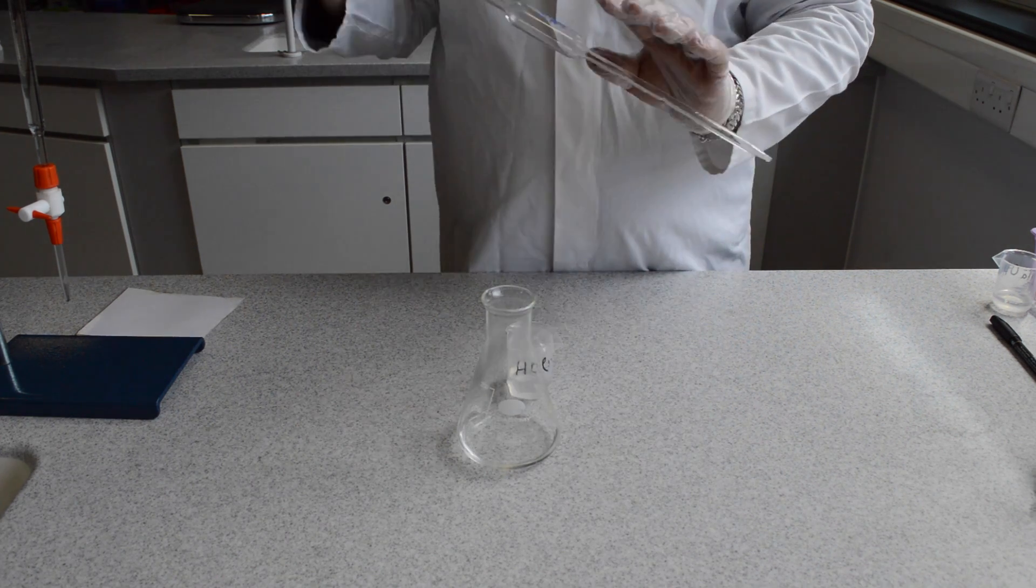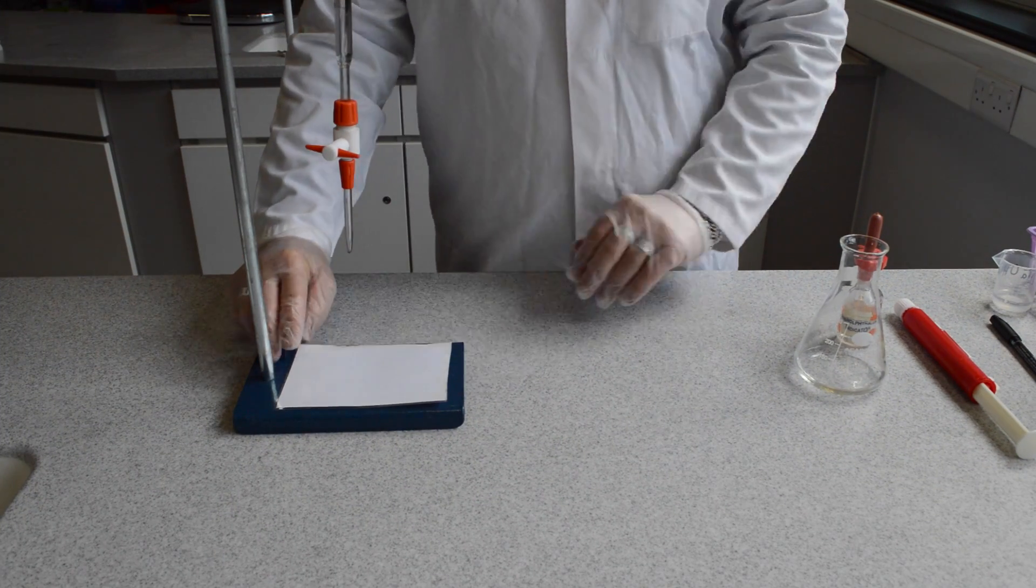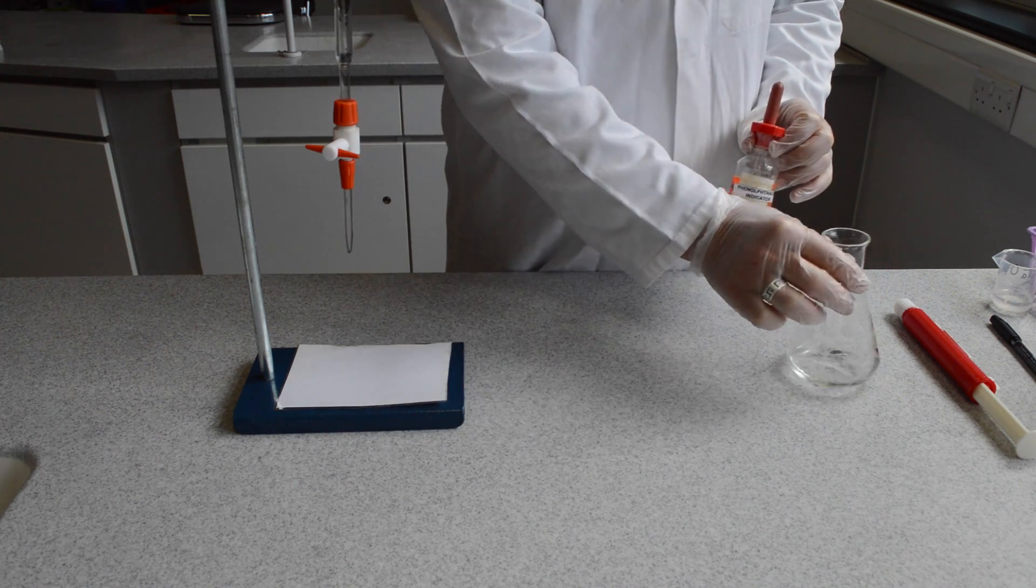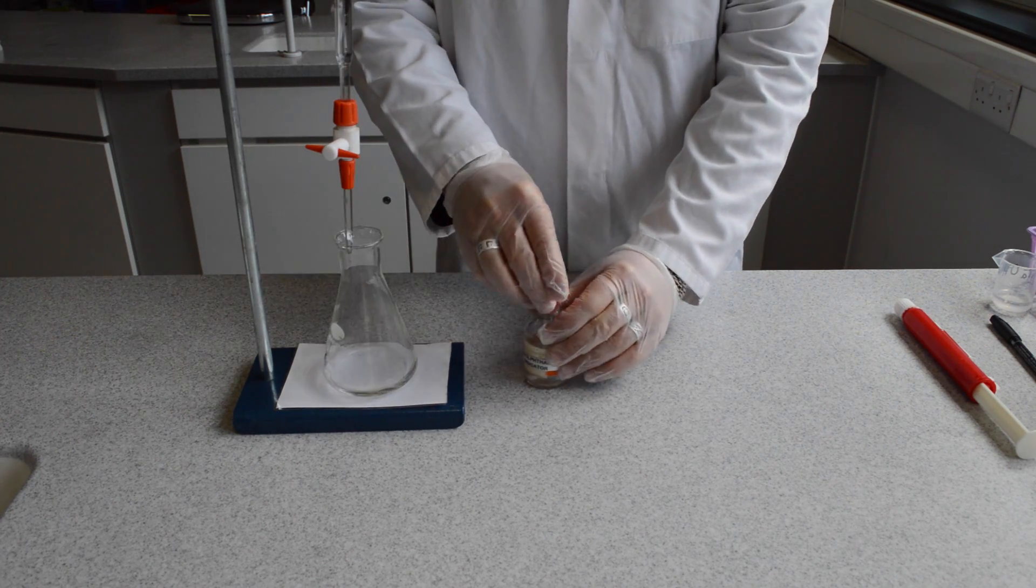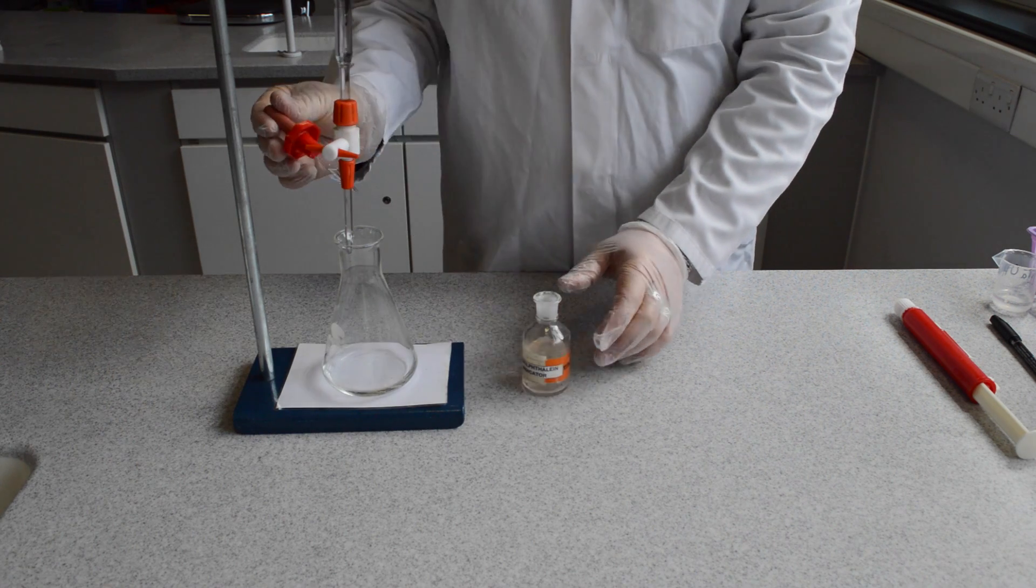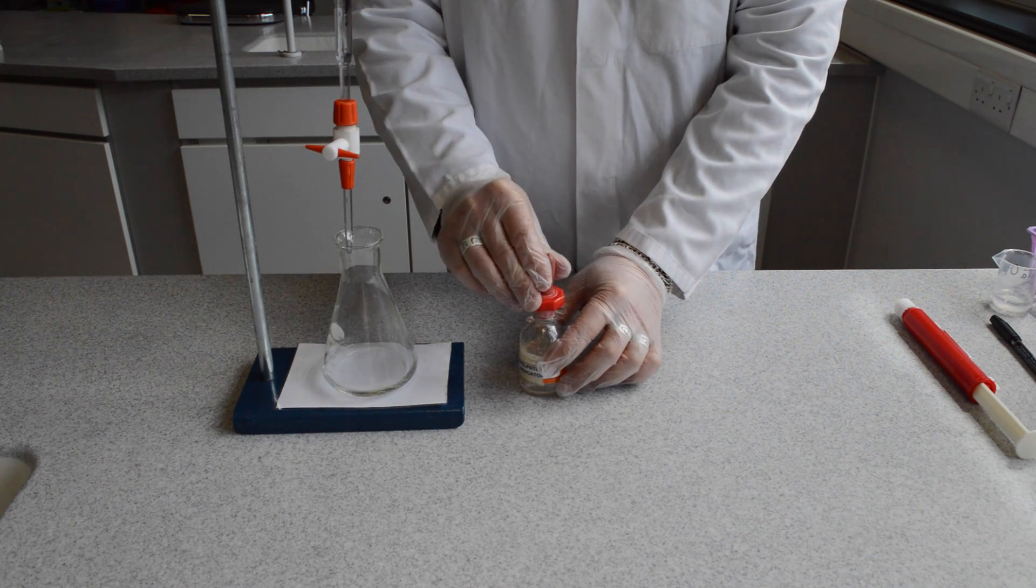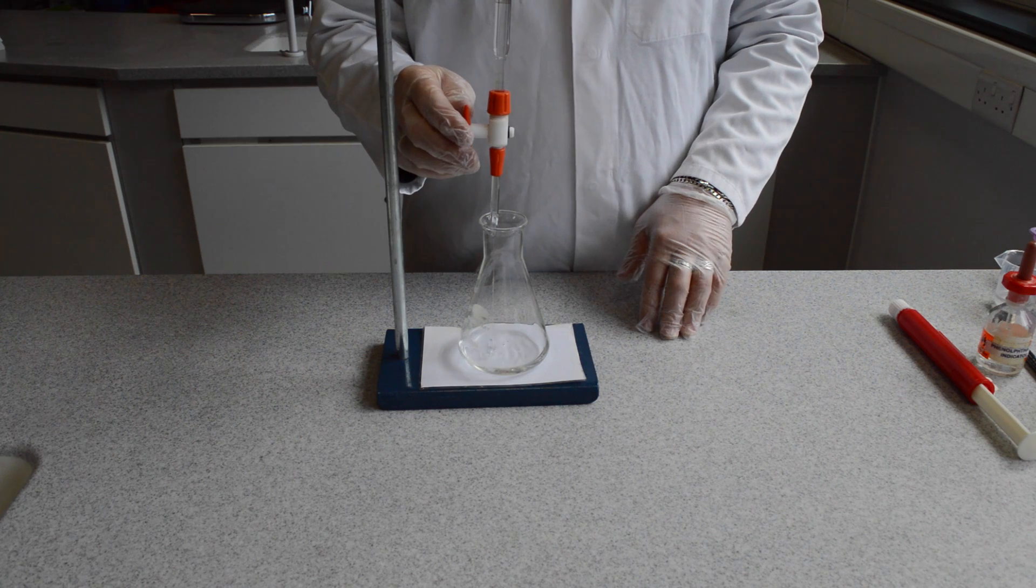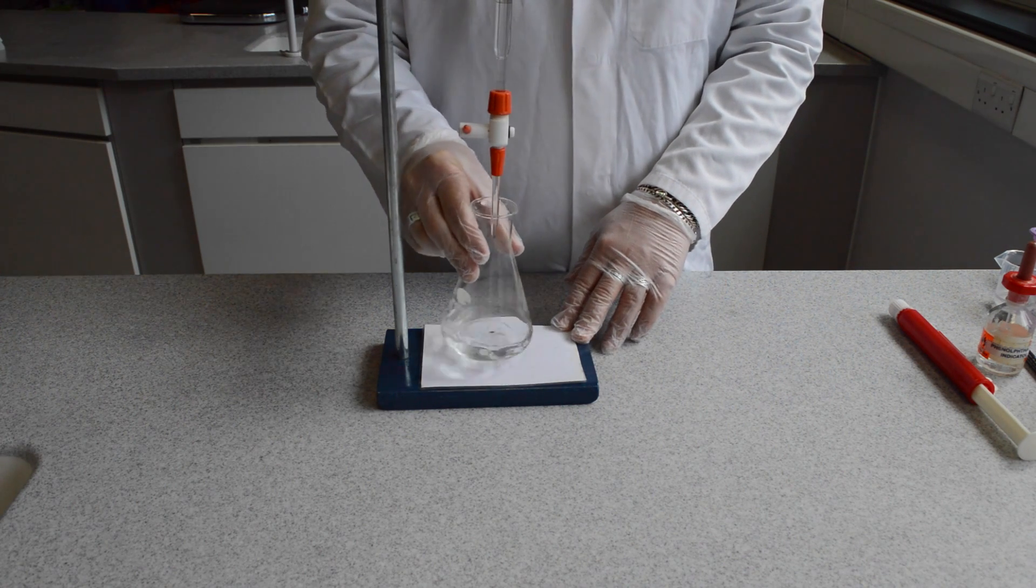When performing the titration, use a white card or white tile on the base of the burette stand. This enables any colour changes to be easily visible. Add two drops of phenolphthalein indicator to the hydrochloric acid in the conical flask. Then start to release the sodium hydroxide from the burette into the acid in the conical flask.